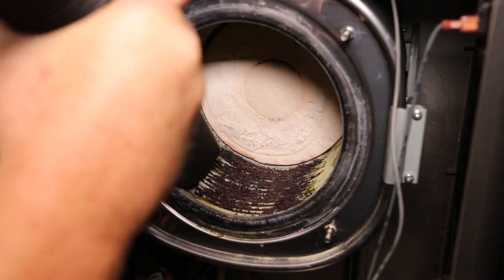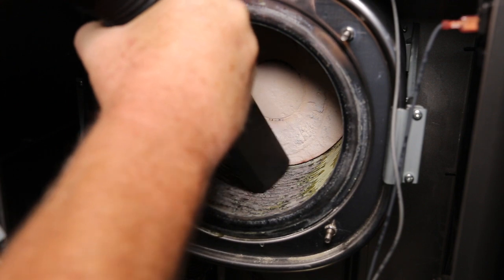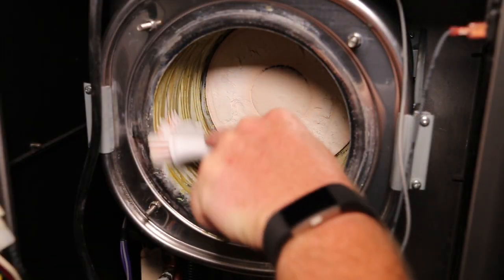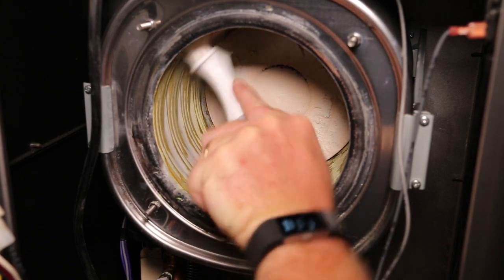Next, vacuum out loose debris in the middle of the heat exchanger. Brush the heat exchanger with non-metal, non-abrasive brush, being careful not to damage the target wall.